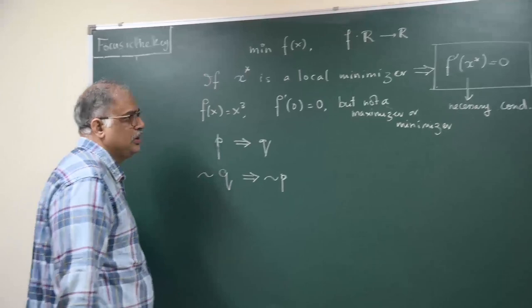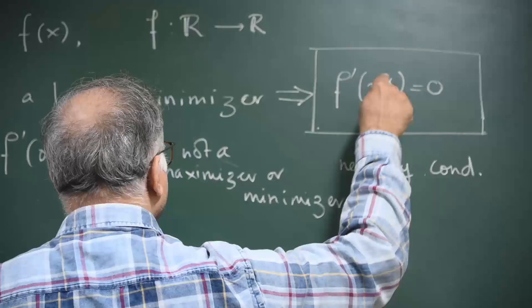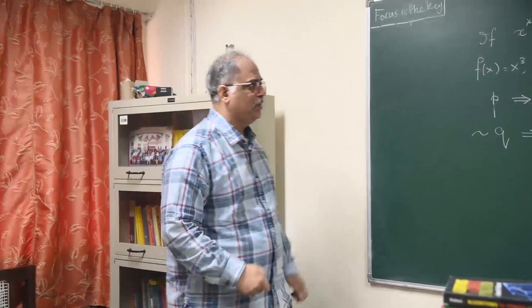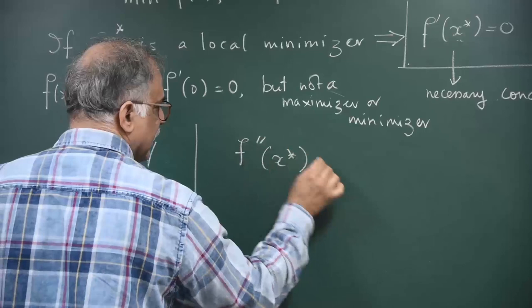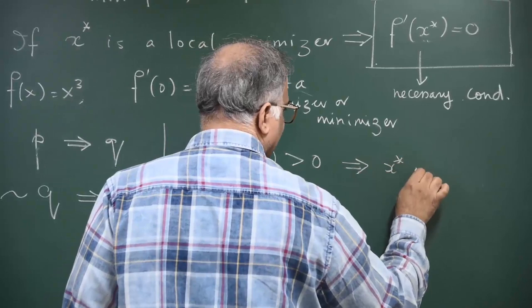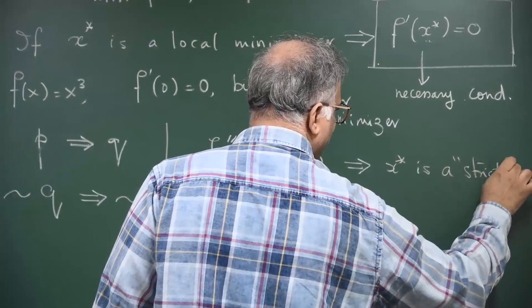So that is a very important thing. It can only tell you that if f'(x*) is not equal to zero, then x star is not a minimizer. That is the real power. It is a negative statement. Then you obviously have your second order condition, which you know that if you have second order condition and you have the second derivative strictly greater than zero, then it implies that x star is actually a strict local minimizer.